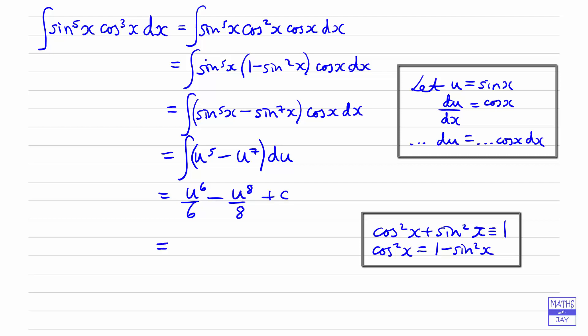And then at the very end, we remember that in fact u is sine x. So we've got 1 sixth of sine to the power of 6x. And similarly here, minus 1 eighth. And sine to the power of 8 here.